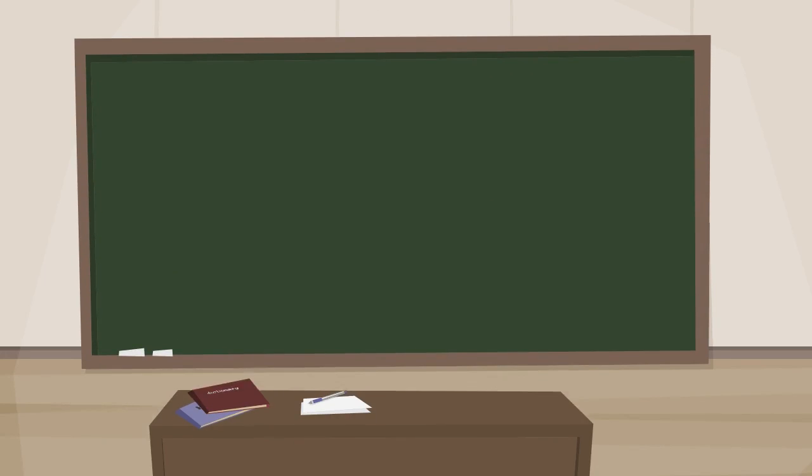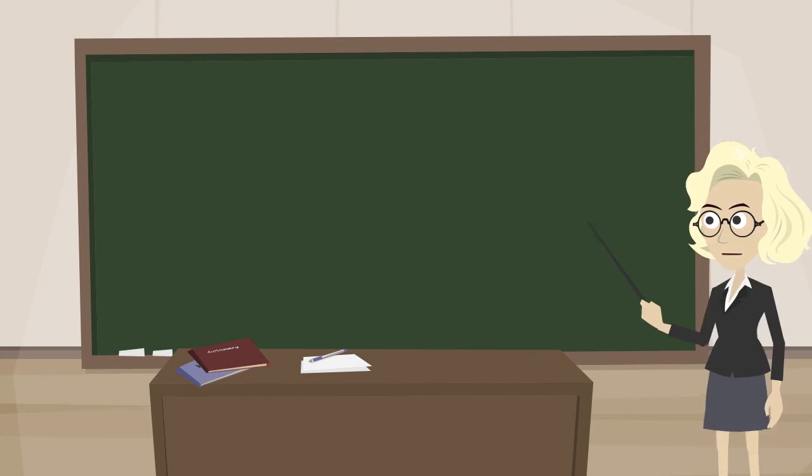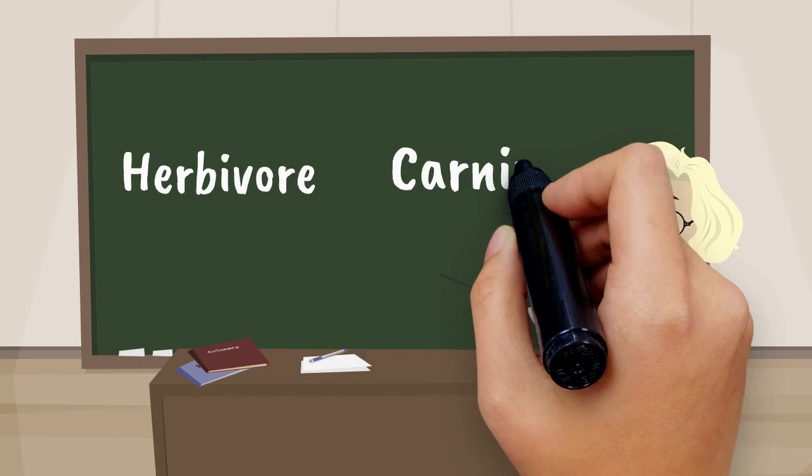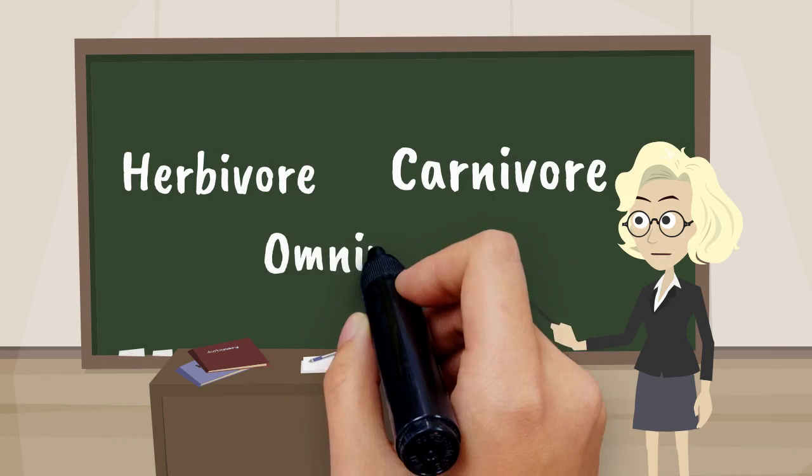Hello students, today we will talk about three types of animals which are herbivore, carnivore and omnivore.